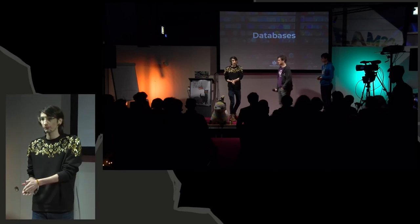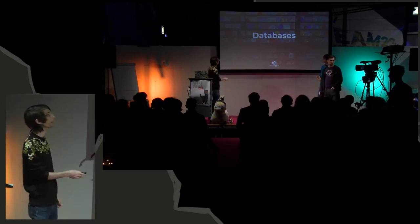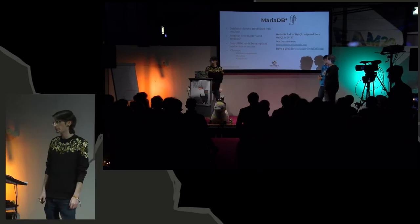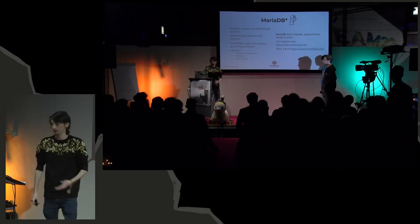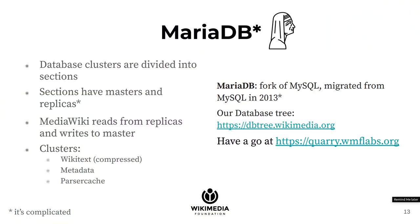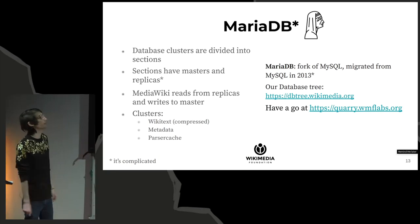Now for databases — my favorite topic, the dungeons of every production system. We use MariaDB, switching from MySQL in 2013. Because we're fully open source, you can not only check our database tree and see replicas and masters, you can actually query Wikipedia's live database. Someone once reported this as a security issue, but we intentionally allow it — it's sanitized, with password hashes removed.